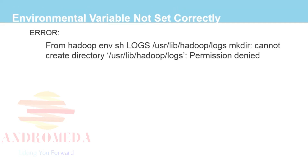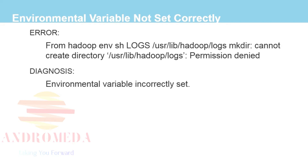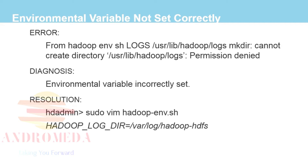Another example of a configuration error was an environmental variable that was not set correctly. The error message was: cannot create a directory called user/lib/hadoop/logs, permission denied. We recognized immediately that this was a diagnosis where the environmental variable had not been set correctly. The resolution was simply to go into our hadoop-env.sh and set it to the proper directory, var/log/hadoop-hdfs.